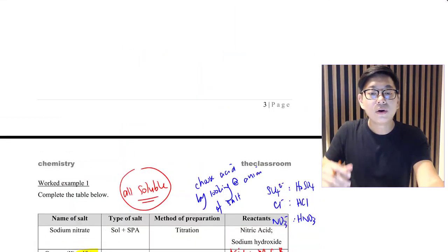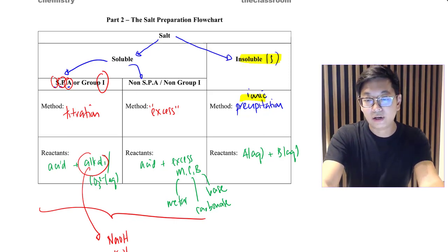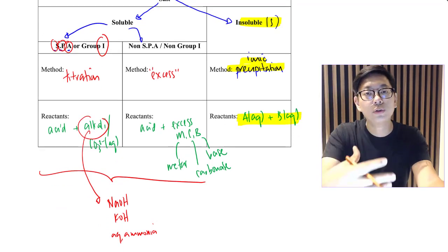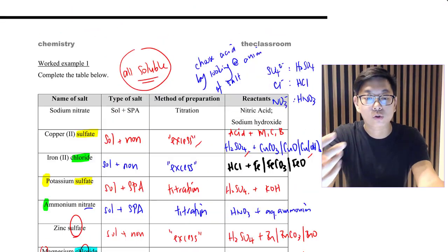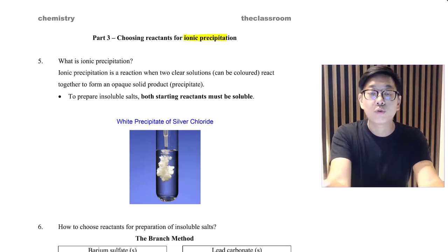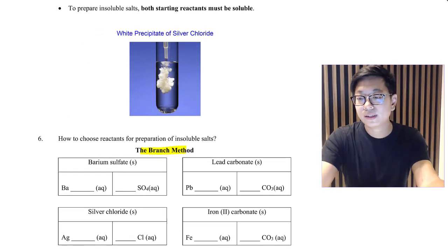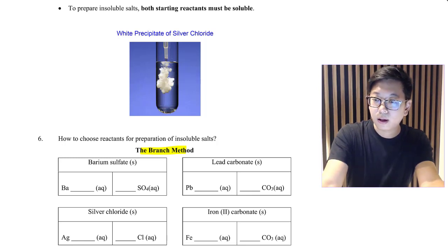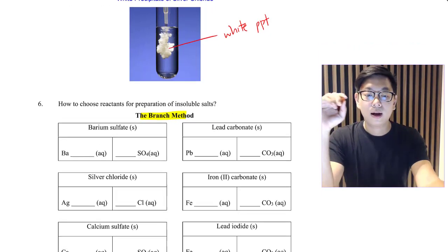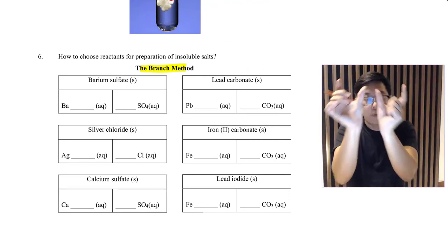Now let's cover insoluble salts. If the salt is insoluble, the method is ionic precipitation. Some students struggle with choosing reactants, so I'm going to teach something called the branch method. To choose reactants for ionic precipitation to make insoluble salts, we apply the branch method. We take the cation and anion of the salt and split it into two — we branch it out.